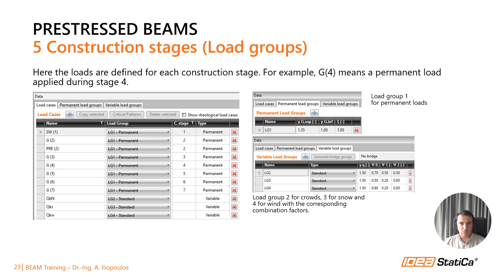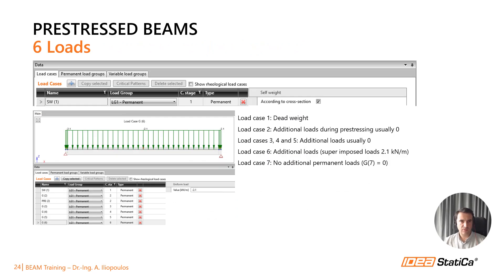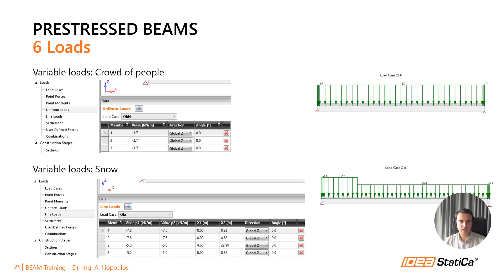In our example, load group 1 has to do with permanent loads, 2 refers to crowd loading, 3 to snow, and 4 to wind. The definition of loads is quick and easy. The self-weight is calculated automatically. For the pre-stressing, intermediate storage, and transport stages, there are usually no additional loads other than the self-weight. The only load we enter is the superimposed dead load in stage 6. You can input uniform loads, line loads, point forces, or settlements.